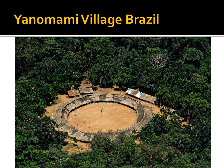Here we can see a Yanomami tribal village in Brazil — a very large circular construction with no side walls on the homes. It's basically a large tent with beams and thatch roofing, designed to give protection from the sun while keeping as much open as possible to get as much breeze as possible, because they are living in a tropical rainforest.